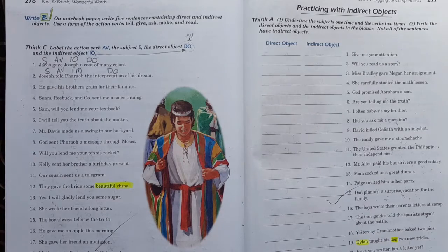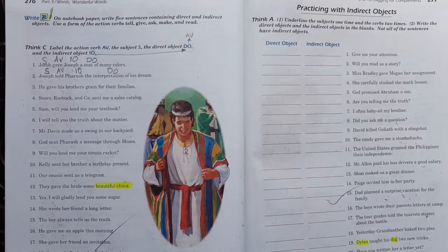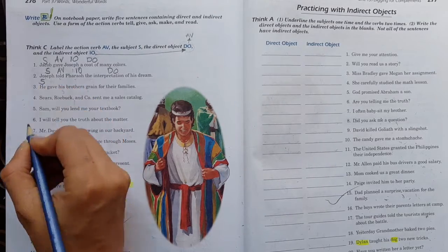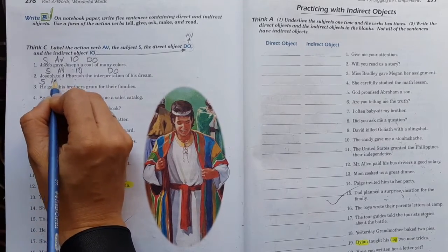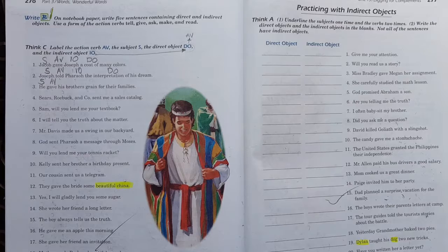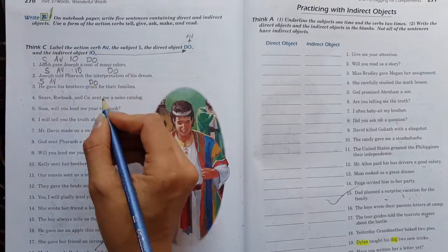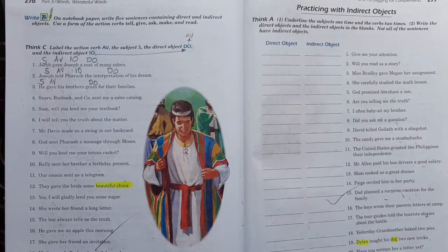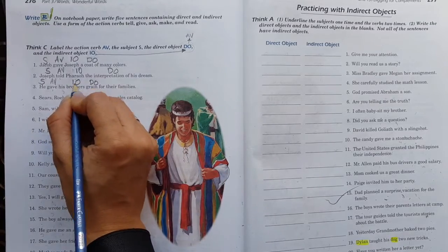Joseph le dijo a Faraón la interpretación de su sueño. Entonces, vamos a entender. Joseph, sujeto. Le dijo, action verb. ¿Qué dijo? La interpretación de su sueño. ¿Y a quién se lo dijo? Pues se lo dijo al Faraón. A eso me refiero con lógica, mis amores.